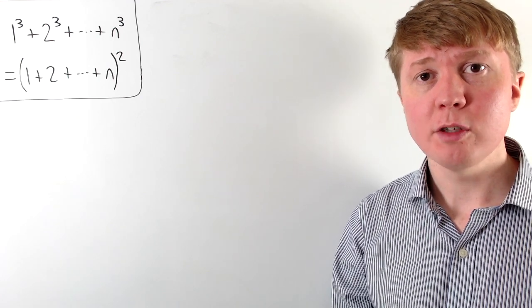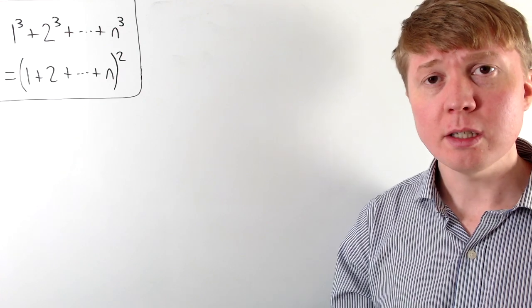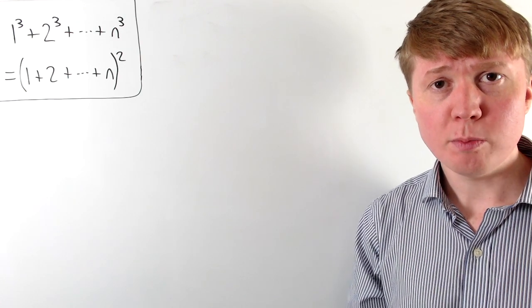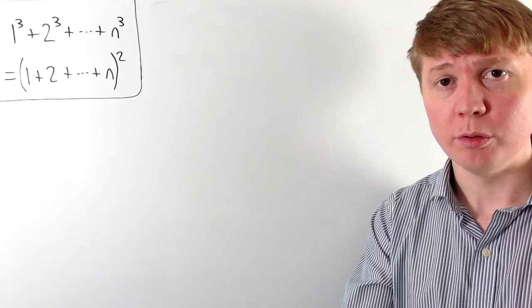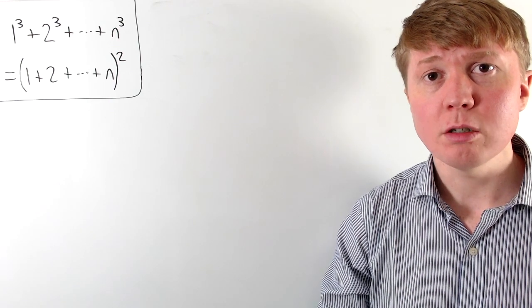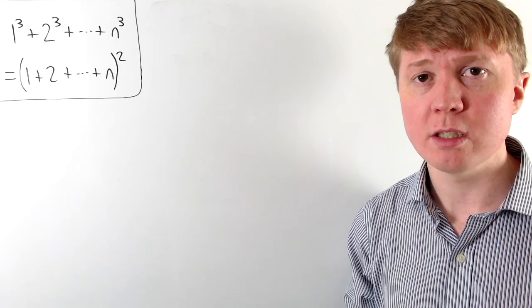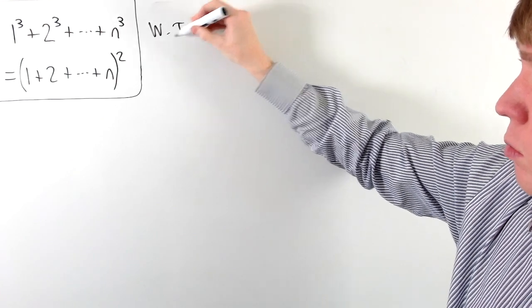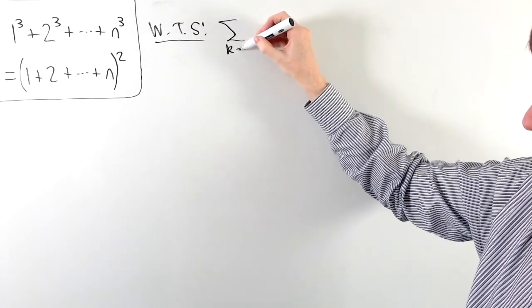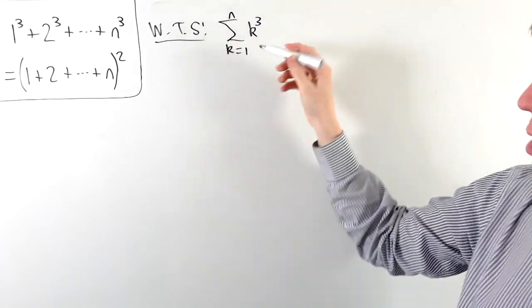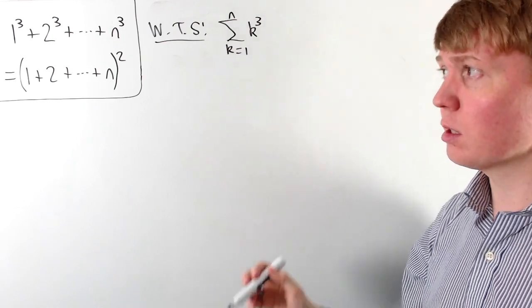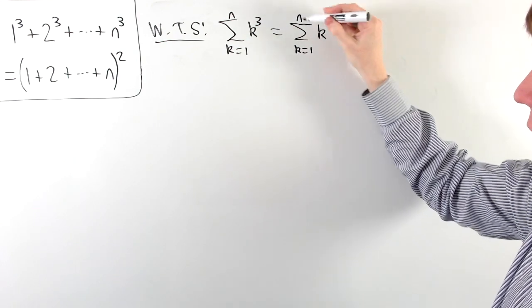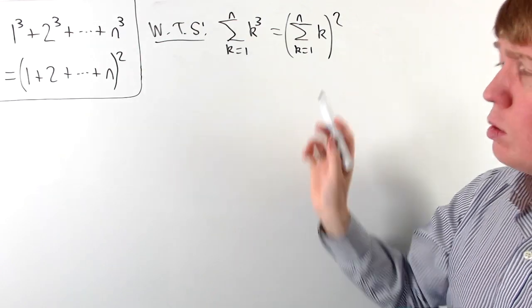We're going to look at a proof of this result. If you have the sum of the first n cube numbers, this is equivalent to taking the sum of the first n integers all squared. This is a really nice proof because it's not a geometric visual proof, and it doesn't rely on proof by induction. In sigma notation, we want to show that the sum from k equals 1 up to n of k cubed is equal to the sum from k equals 1 up to n of k, all squared.